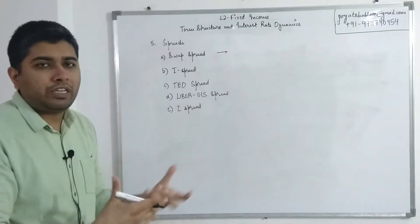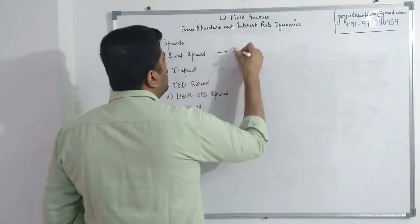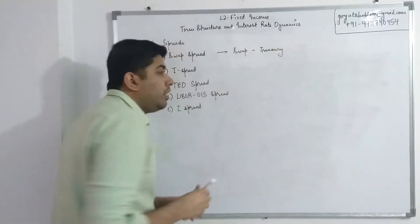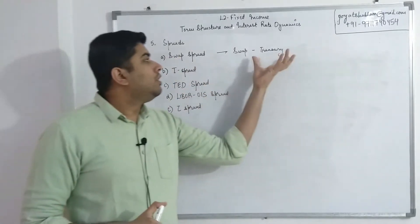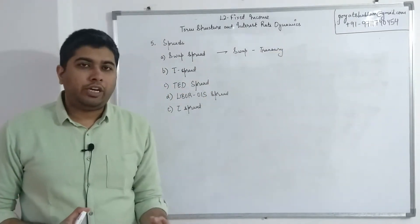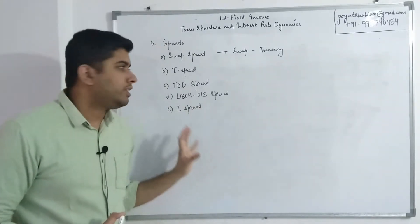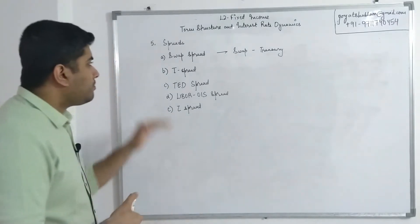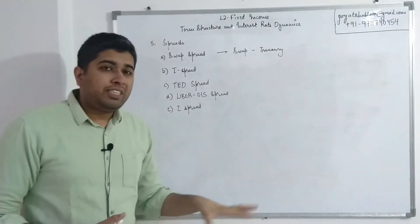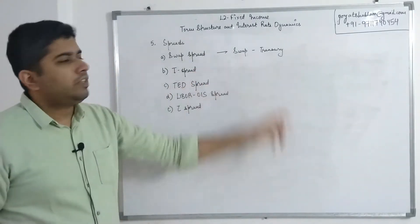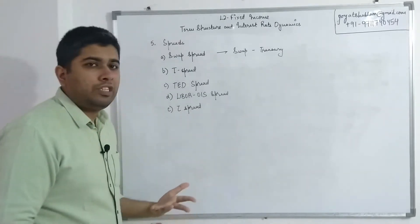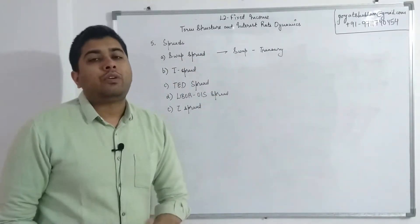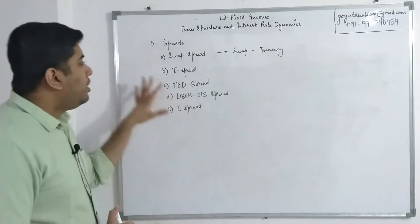First, we have swap spread. Spread is basically the difference between two interest rates or yields. Swap spread is the difference between swap rates and treasury rates — swap contract interest rates minus the yields on prevailing government securities. Calculations are fairly basic: you're given swap rates and treasury rates, and you subtract them. The question might also give you a bond YTM as extra information just to confuse you.